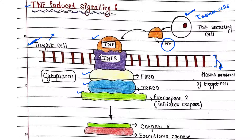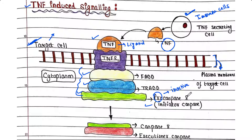Along with the receptor, FADD, TRADD, and pro-caspase 8 also bind to form a complex. This complex consists of TNF as the ligand, TNFR1 as the receptor, and FADD, TRADD, and pro-caspase 8 in the cytosolic part. Pro-caspase 8 is the initiator caspase because it initiates the downstream breakdown of proteins.